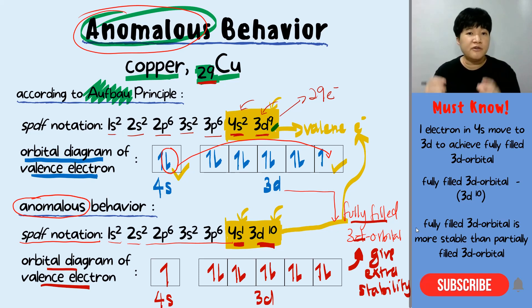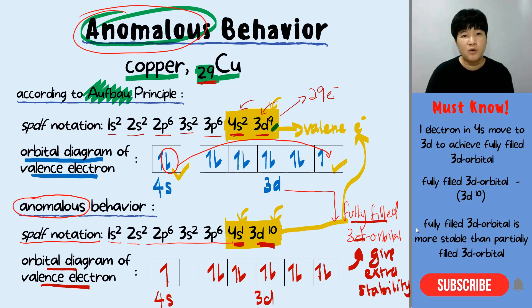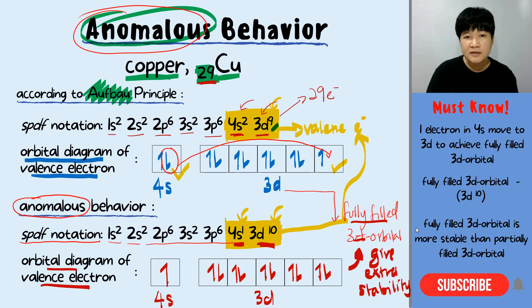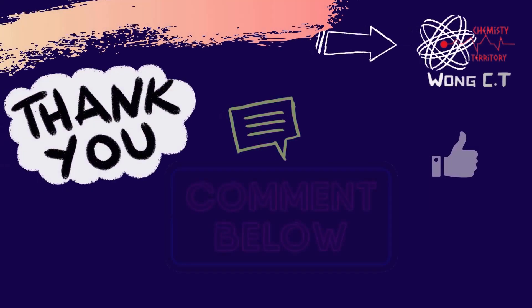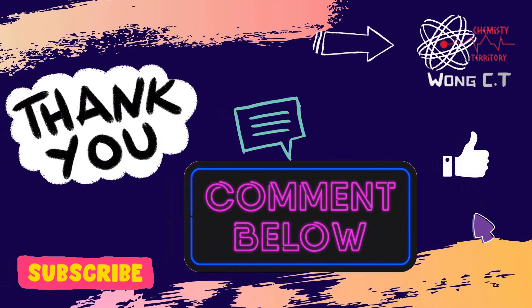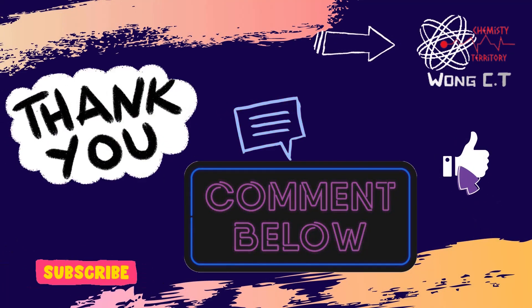That's it for this short video. I hope you now understand why chromium and copper have anomalous behavior. If you still have any questions, drop them in the comments below and I'll get back to you. Remember to like the video and subscribe to my channel for more videos. I'll see you in the next video — thank you for watching.